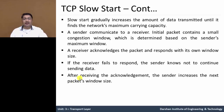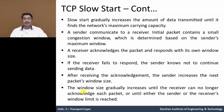After receiving the acknowledgment, the sender increases the next packet window size — meaning two segments. The window size is gradually increased until the receiver can no longer acknowledge each packet, or until either the sender's or receiver's window limit is reached. So TCP slow start gradually increases data transmission from sender to receiver based on their window size and network maximum carrying capacity, for controlling congestion.